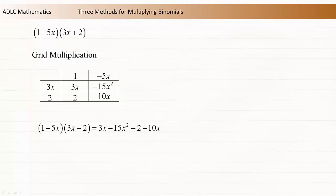Now use the inside of the grid to write the terms of the product: 3x minus 15x squared plus 2 minus 10x. This expression contains like terms and can be simplified further. Adding the 3x and the negative 10x terms gives negative 7x. The other two terms remain the same.